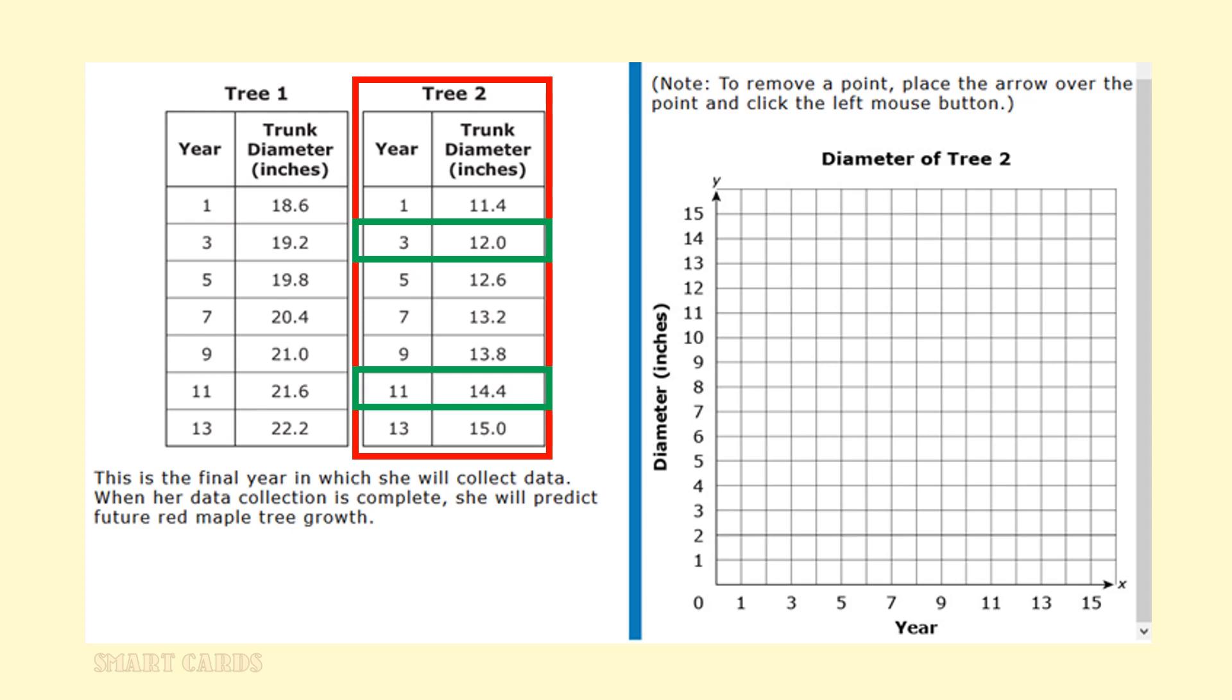The scientist plots the data for tree 2 on a coordinate grid. She begins by plotting data for year 3 and year 11. What are the locations of the two points on the coordinated grid? We simply plot the points by looking at the intersections between each year and the trunk diameter. As you can see by the two flashing points on the grid, where year 3 intersects with the trunk diameter, which is 12 inches, and where year 11 intersects with its trunk diameter, which is 14.4 inches.